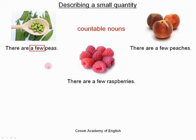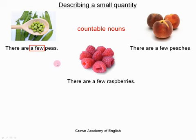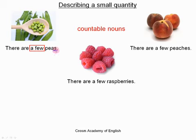The structure is: we say 'there are a few peas.' With countable nouns, we only use the word 'a few.' And since we are talking about the plural, the noun must be in the plural form — so we add an S.